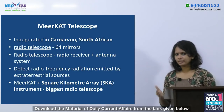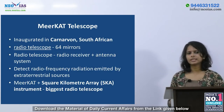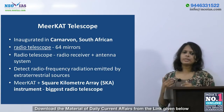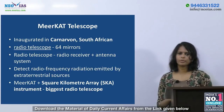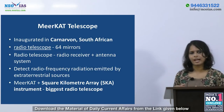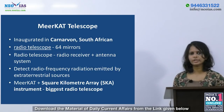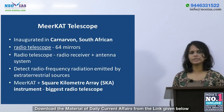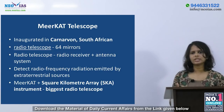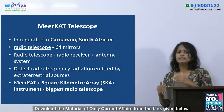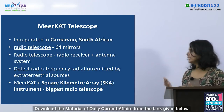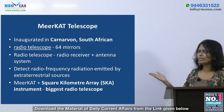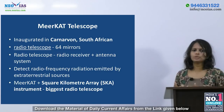Moving on, the next topic is the MeerKAT telescope, which was inaugurated in the South African town of Carnarvon. MeerKAT is a radio telescope — an astronomical instrument consisting of a radio receiver and an antenna used to detect radio frequency radiation emitted by extraterrestrial sources. This MeerKAT telescope will be incorporated into the Square Kilometre Array (SKA) instrument and will become operational in the late 2020s.